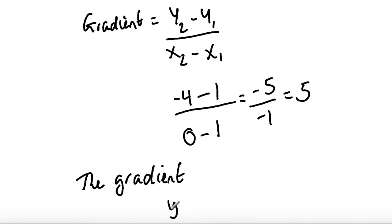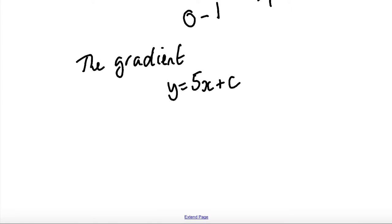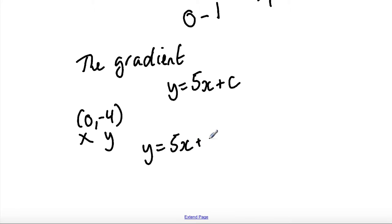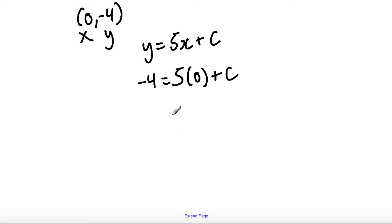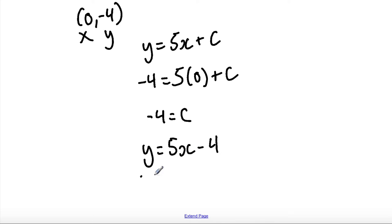The equation can be written as y equals 5x plus c. To find the value of c I'm going to use the coordinates (0, -4). Substituting into y equals 5x plus c: y is -4, so -4 equals 5 times 0 plus c. 5 times 0 is 0, so -4 is equal to c. Therefore the equation of the line is y equals 5x minus 4.